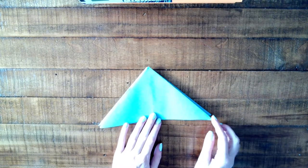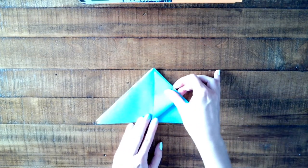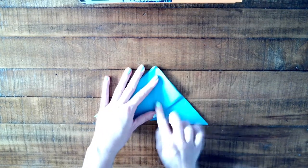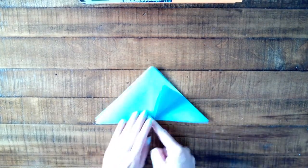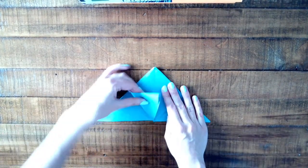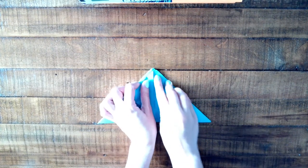Lay your triangle flat on a surface and take the bottom right corner and fold it up to the middle so you have a small triangle. Do the same on the left, so left bottom corner up to the middle.